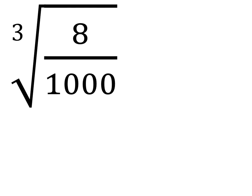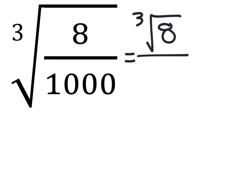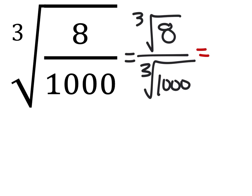This one also splits up, so I'm going to split it up. We've got the cube root of 8 over the cube root of 1000. The cube root of 8 — that's a perfect cube — that's 2, and 1000 is also a perfect cube of 10.